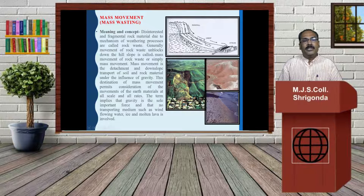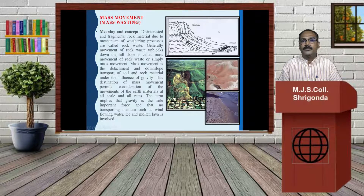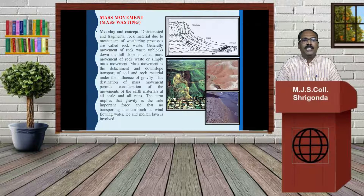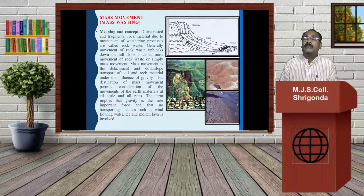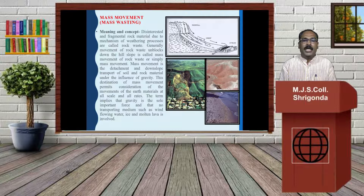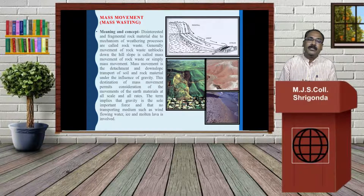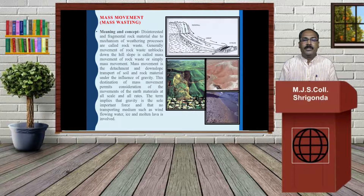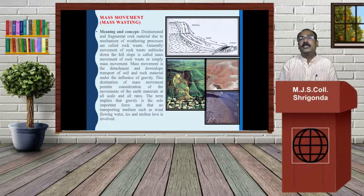Mass Movement is the detachment and downslope transport of soil and rock materials under the influence of gravity. This definition of mass movement permits consideration of the movements of earth material at all scales and all rates. The term influence implies that gravity is the slope force and that no transportation medium such as wind flow, water, ice, and molten lava is involved.